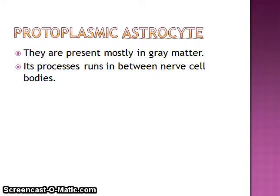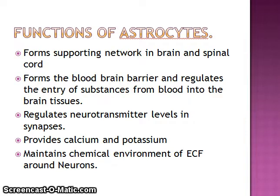Protoplasmic astrocytes are present mostly in the gray matter and run in between the neuron cell bodies. The functions of astrocytes include: forming the supporting network in the brain and spinal cord; forming the blood-brain barrier and regulating entry of substances from blood into brain tissue; regulating neurotransmitter levels in synapses; providing calcium and potassium; and maintaining the chemical environment of extracellular fluid around neurons.